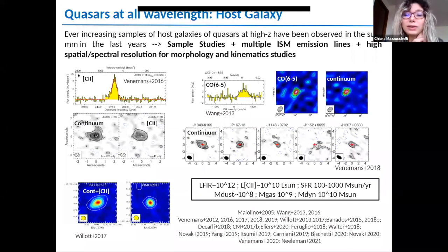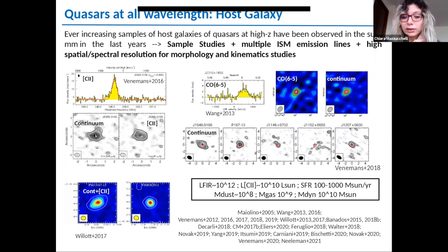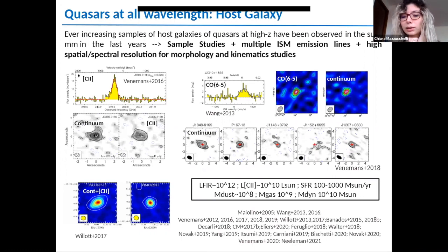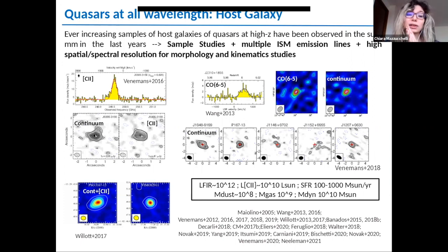Another aspect of the quasar SED I would focus on is the far-infrared, rest-frame far-infrared emission, mainly due to cool gas and dust from the interstellar medium in the host galaxy. An important line in this case is the CII emission line. This is particularly interesting at high redshift because the emission from the stars is overwhelmed by the emission from the accretion disk and the quasar itself. Observations from ALMA and similar facilities in Chile can study these wavelengths, and all these studies show quasars at high redshift are hosted by massive galaxies with high infrared and CII luminosities with star formation rates of hundreds to thousands of solar masses per year.